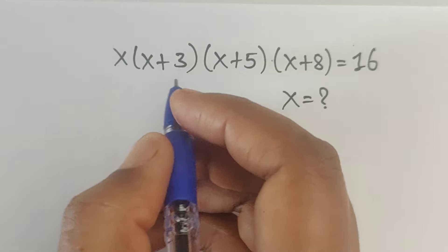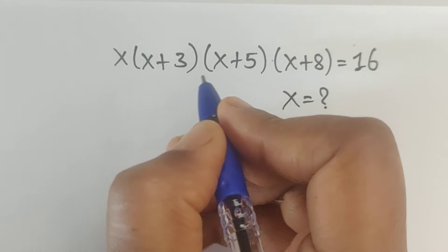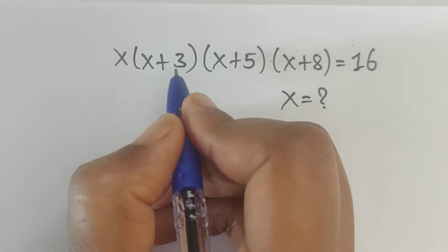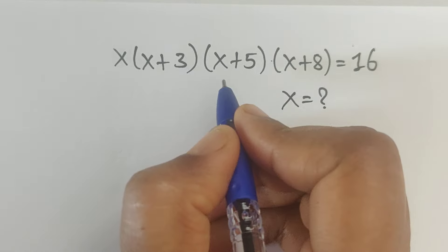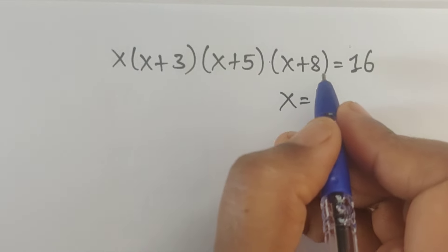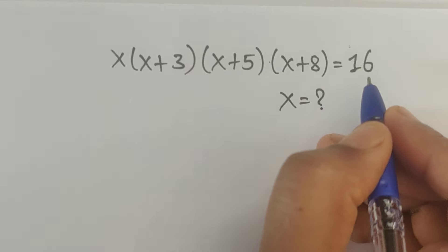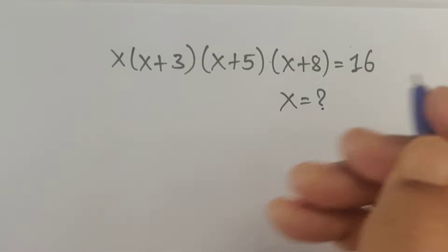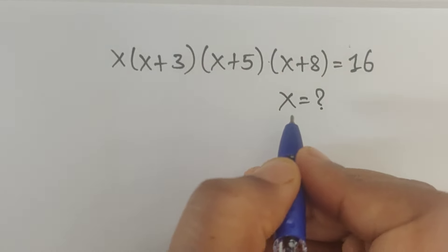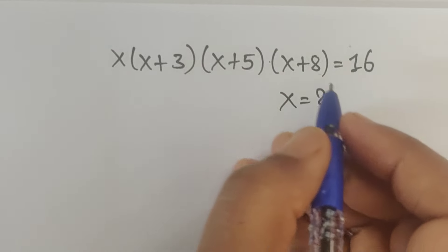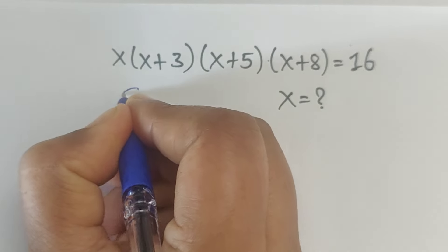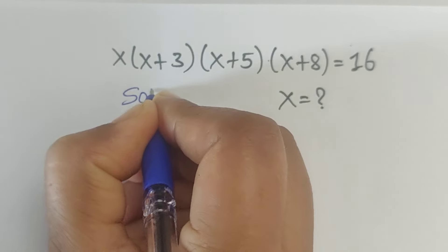Hello everyone, welcome back to our channel. Here we have one problem: x times (x plus 3) times (x plus 5) times (x plus 8) equals 16. In this problem we have to find the value of x. So how do we solve this problem? Let's see. Solution.